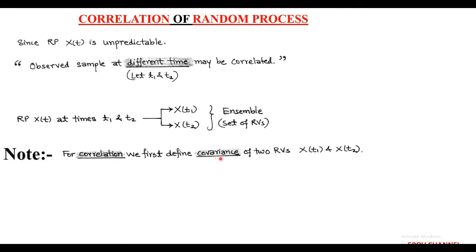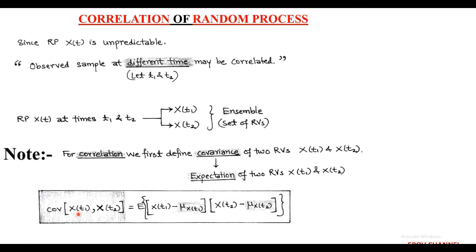In order to determine the correlation, we first define the covariance of two random variables X(t1) and X(t2). The covariance can be obtained using the expectation operator of the two random variables, and is described as: covariance of X(t1), X(t2) equals expectation of the product of [X(t1) minus mu_X(t1)] into [X(t2) minus mu_X(t2)], where mu_X(t1) and mu_X(t2) are the mean values corresponding to random variables X(t1) and X(t2) respectively.